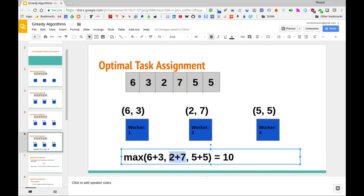Likewise, for worker two, two plus seven is also nine, so we have to wait nine hours for worker two to complete both of its tasks. For worker three, it takes 10 hours since five plus five is 10. So the maximum amount of time that we'll have to wait for all of the workers to finish their tasks is 10. And this turns out to be the smallest number that we could get here.